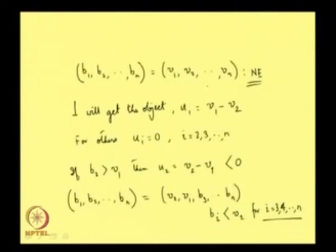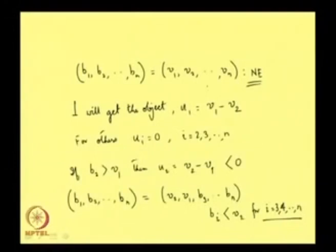If player 2 deviates from V_1 to something less, as long as the deviation is greater than V_2 he is still getting the object and his payoff remains V_2 minus V_2, which is 0. By bidding more he is still getting the object so the payoff remains 0. If he bids equal to or less than V_2, he does not get the object, but even then his payoff remains 0. So by deviating, player 2 cannot improve his payoff — this is optimal for player 2.